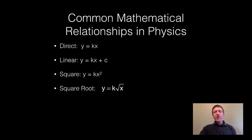We also have a square root relationship. y can equal some constant k times the square root of x. Also an inverse relationship y equals k over x. Again, k not the slope in this case. And finally, we could have an inverse square relationship y equals k over x squared.